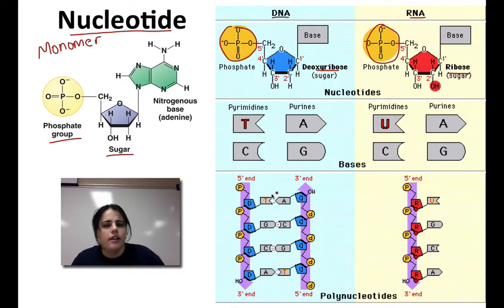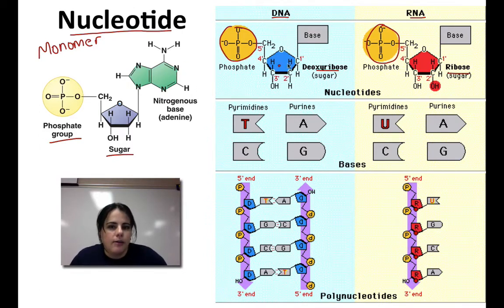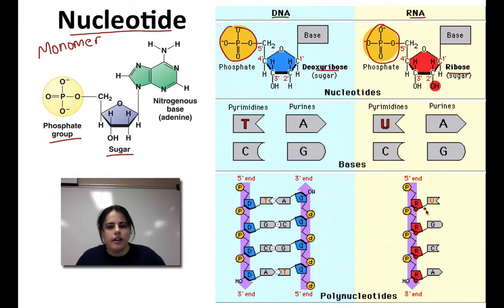DNA also forms double strands, and RNA forms single strands. So a couple of differences: DNA has a deoxyribose sugar, RNA has a ribose sugar; DNA has thymine, RNA has uracil; and DNA is double-stranded while RNA is single-stranded. But either way, they are both nucleic acids because they're both made of nucleotides.